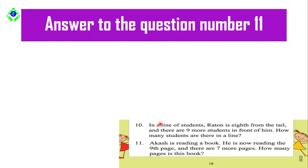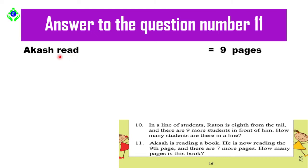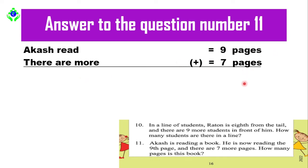Let's go to the board. First, write: 'Akash read nine pages.' Note that 'read' here is spelled R-E-A-D but pronounced 'red' because it is past tense. You will learn about present, past, and future tenses when you are in Class 6. So: 'Akash read nine pages.' After that, write: 'There are more seven pages.'